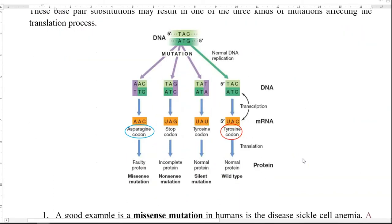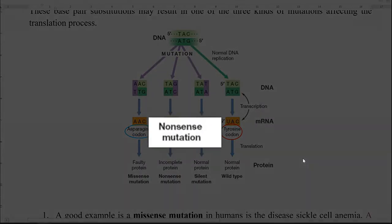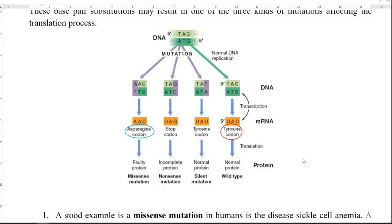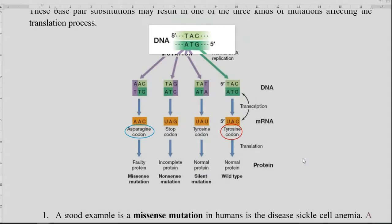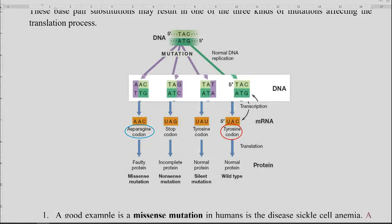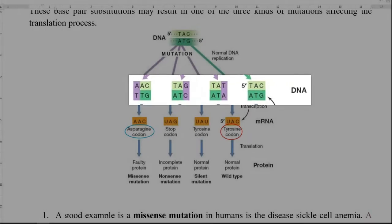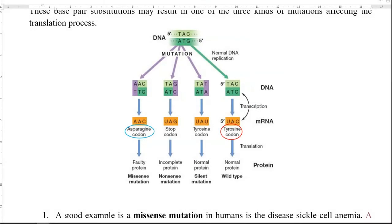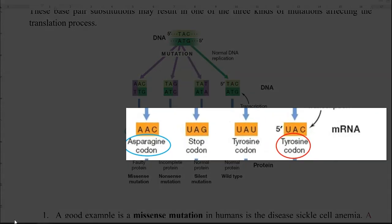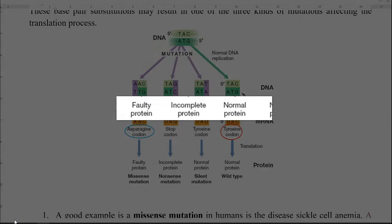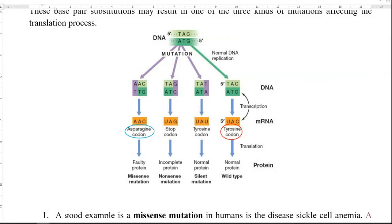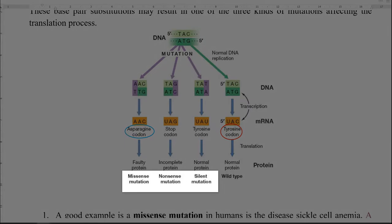This base pair substitution can cause three different kinds of mutations that affect the translation process. The three types of mutations include missense mutation, nonsense mutation, and silent mutation. The top diagram shows the normal DNA, and the next shows possible modifications in DNA sequences due to mutation. When those mutated DNA sequences are transcribed and translated, different kinds of proteins could result.